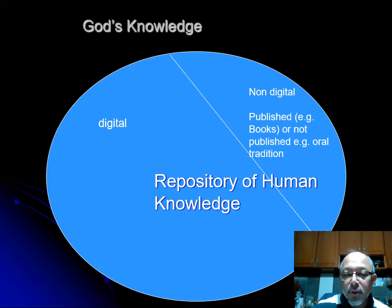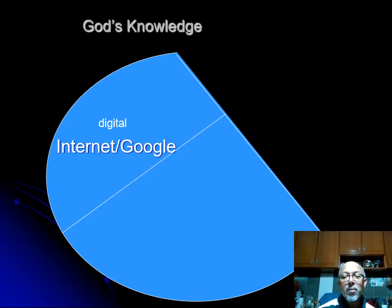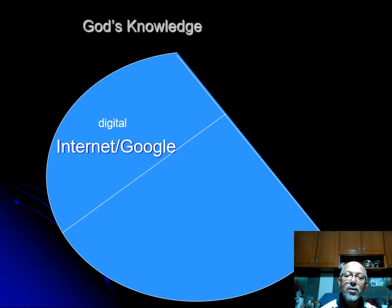Even in digital format, not all knowledge is accessible to us. Some is kept on the internet, connected to us via mobile devices or computers — this is the digital internet realm of knowledge. For all intent and purpose, Google, or 'Uncle Google' as people call it, normally knows about all this digital internet knowledge. But there are also other kinds of knowledge beyond Google, beyond the internet.